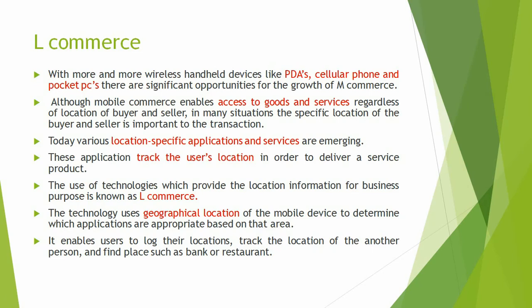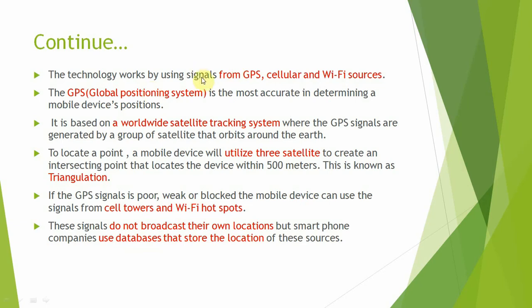Location also enables users to track their location, track the location of another person, and find places such as a bank or restaurant. If we want to find any place, Google Maps is the best application for tracking. The technology works by using signals from three sources: GPS, cellular, and Wi-Fi. GPS stands for Global Positioning System and is the most accurate in determining a mobile device's position. It is based on a worldwide satellite tracking system where GPS signals are generated by a group of satellites that orbit around the Earth.